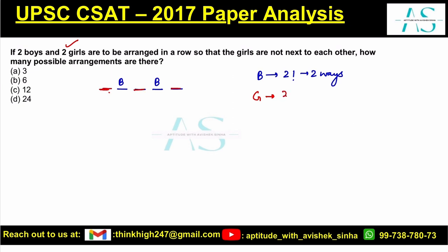We have three vacant positions and just two girls, so it is 3P2, which can be broken down as 3 into 2 — that is 6 ways.